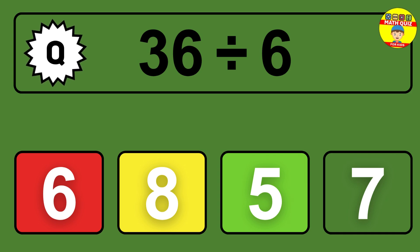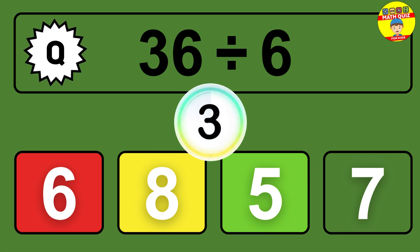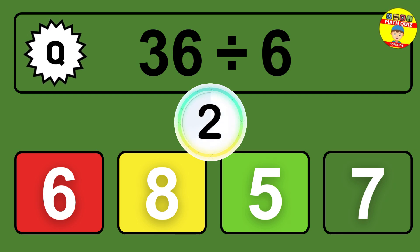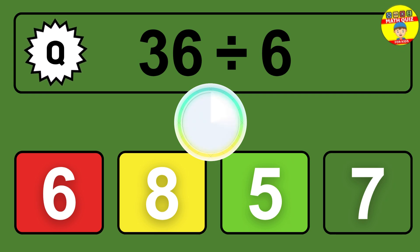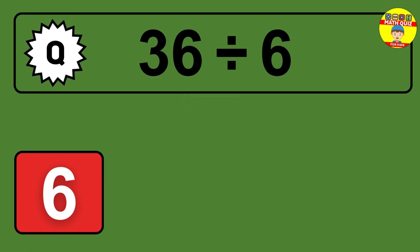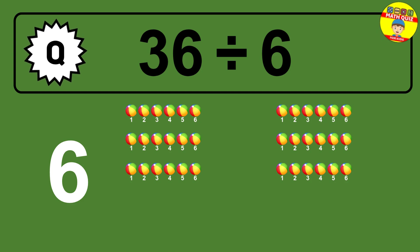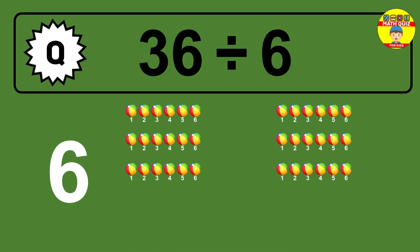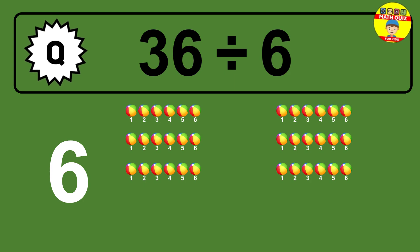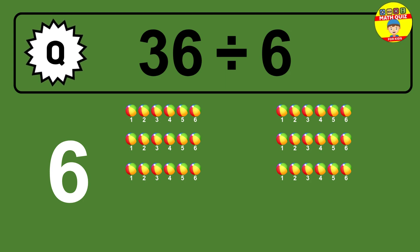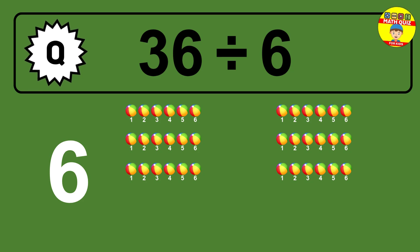36 divided by 6 — time to think. Let's go to the solution. Divide the number 36 by 6. Each group contains 6 units, so dividing 36 by 6 results in 6 equal groups. Thus, the result is 36 divided by 6 equals 6.